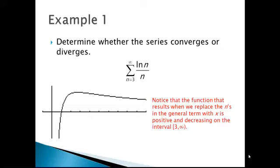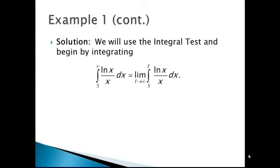Let's look at an example. Determine whether the series converges or diverges: the summation from n equals 3 to infinity of the natural log of n divided by n. If we replace the n's in the general term with x's, the resulting function is the natural log of x divided by x. The graph tells us that this function is positive on the interval from 3 to infinity and also decreasing on that interval, so we'll use the integral test.